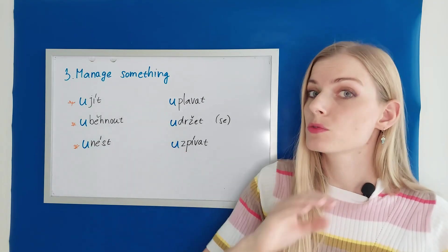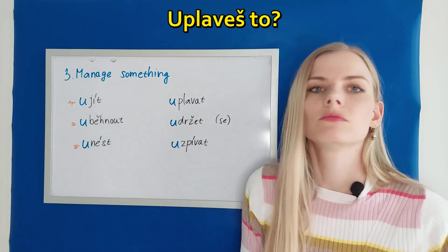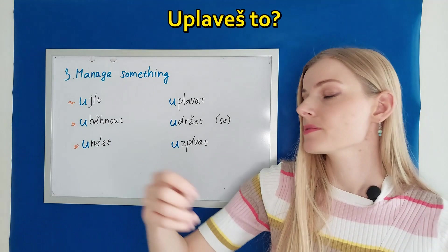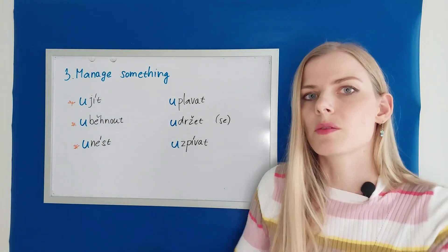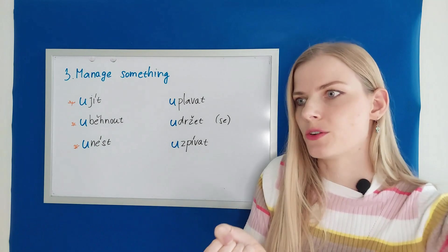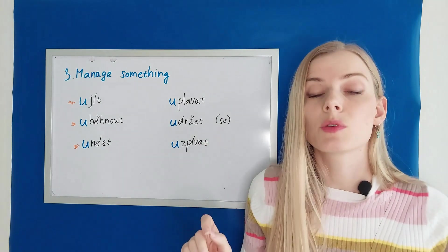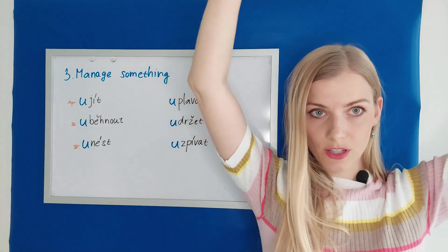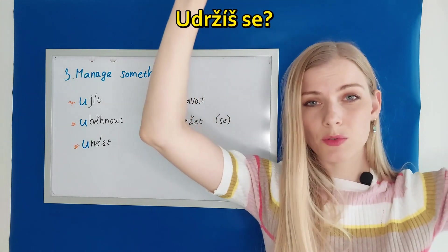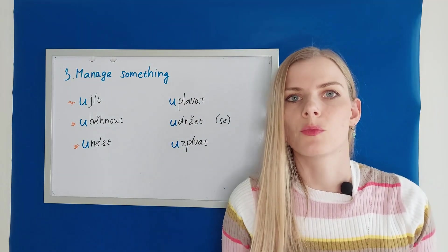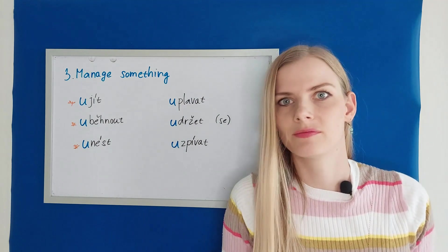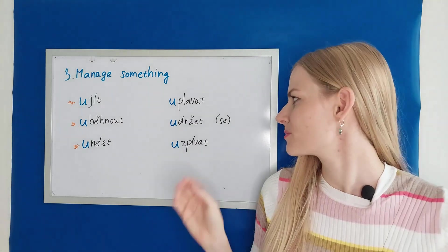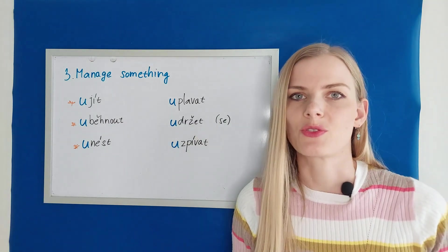Uplavat. To be able to swim. Uplaveš to? Will you be able to swim all this? Udržet. To be able to hold something. For example, to hold a rope. Udržet lano. And when we put se, it means to hold yourself. Udržet se. Udržíš se? Will you be able to hold yourself? In the dialogue we heard, no prostě jsem se neudržela. I couldn't contain myself. Prostě jsem se neudržela. I couldn't help myself. So this would be a metaphorical meaning too.